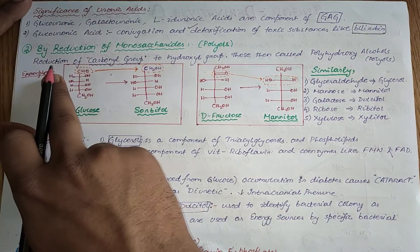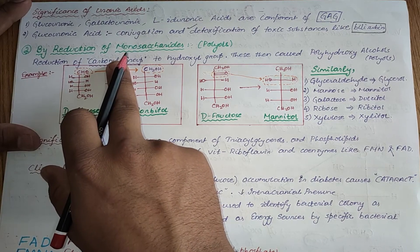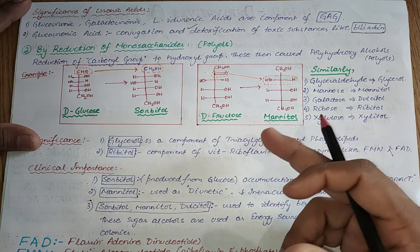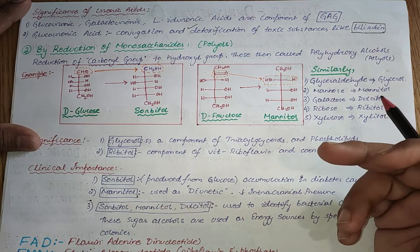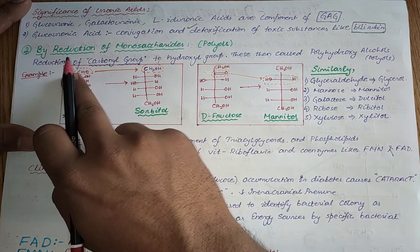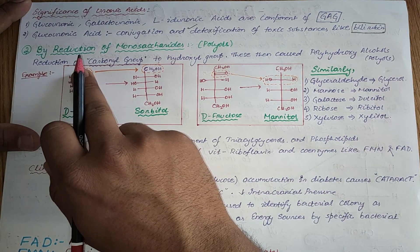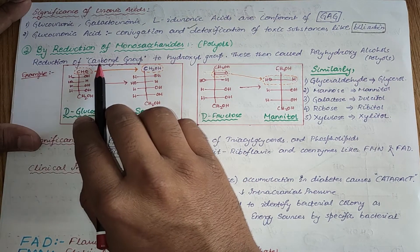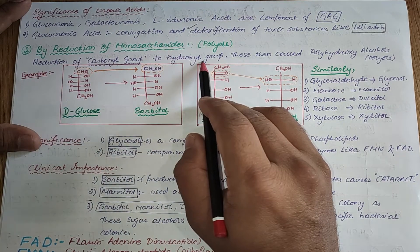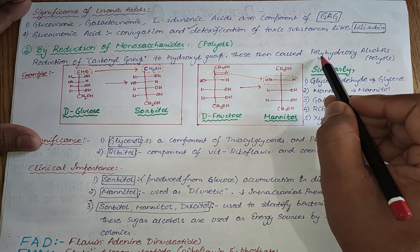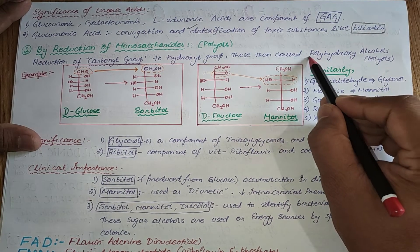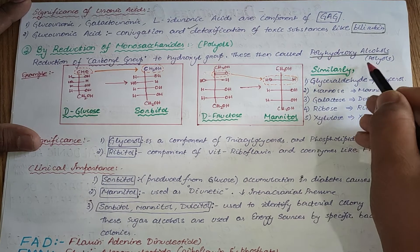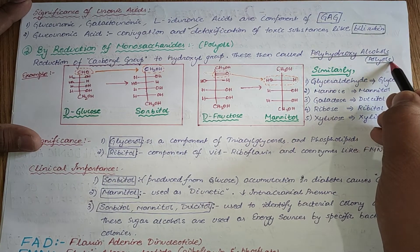By reduction of monosaccharides: reduction means formation of more alcohols from the carboxylic, aldehydic, or ketonic group. The reduction of a carbonyl group to a hydroxyl group produces polyhydroxy alcohols — and because there is formation of more alcohols, these are called polyols.